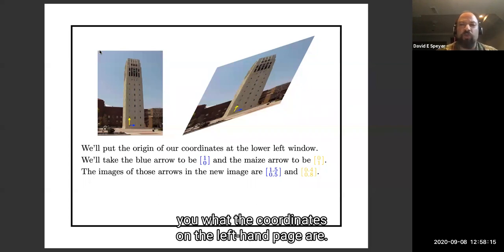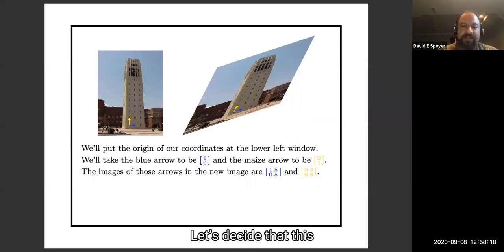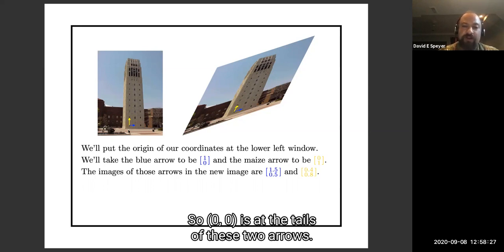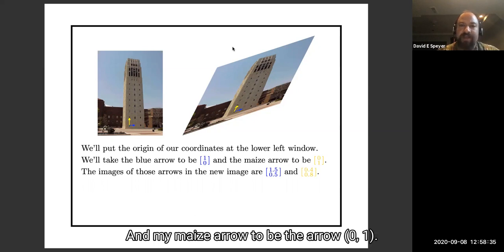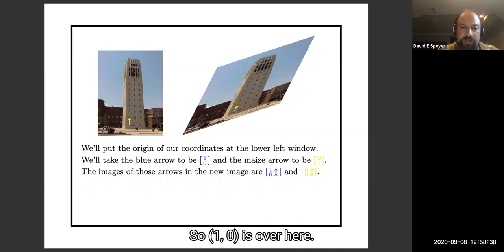I haven't told you what the coordinates on the left-hand page are. Let's decide that the 0, 0 point is the lower left-hand window of the bell tower. So 0, 0 is at the tails of these two arrows. I'll take my blue arrow to be the arrow 1, 0 and my maize arrow to be the arrow 0, 1. So 1, 0 is over here, and 0, 1 is up here.